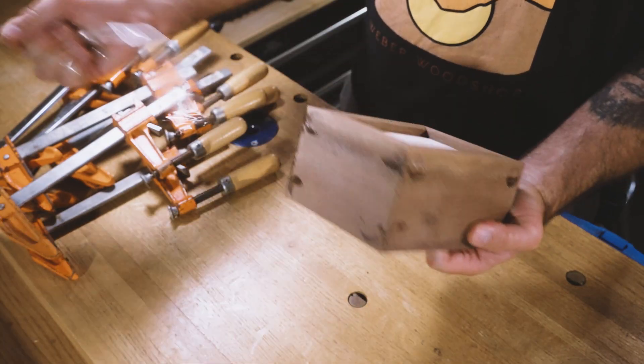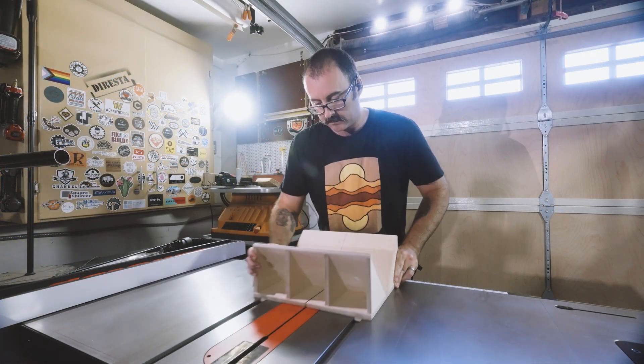After the glue is dry, we get to peel off the tape. And now we get to actually use our new miter key jig.